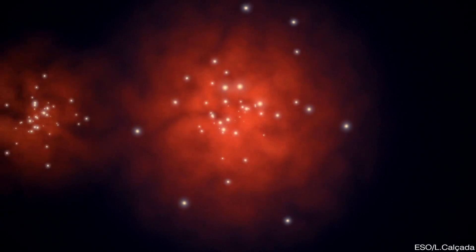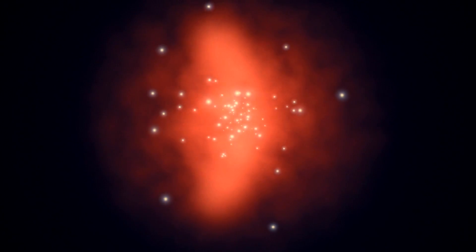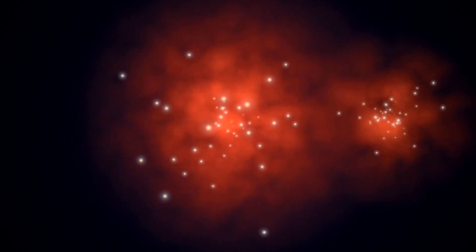Dark matter is weakly interacting. It doesn't really interact with anything. Even though we say weakly interacting, that doesn't mean it interacts with the weak force. It only interacts through gravity. So it doesn't shock. It passes right through and causes these distinct separations.